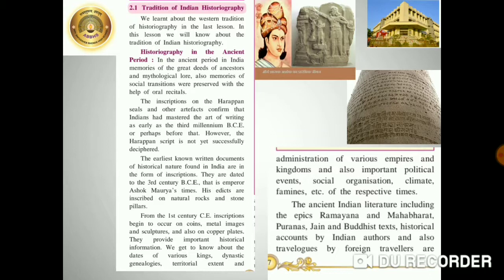From the 1st century CE — that is Common Era — inscriptions began to occur on coins, metal images, sculptures, and also on copper plates. They provide important historical information. We get to know about the dates of various kings, dynastic genealogies, territorial extents and administrations of various empires and kingdoms, and also important political events, social organization, climate, famines, etc. of the respective times. On these inscriptions, everything was written in their style of writing.